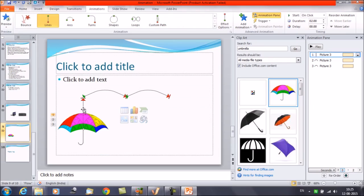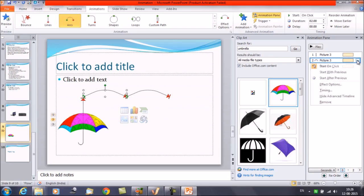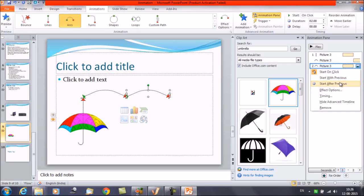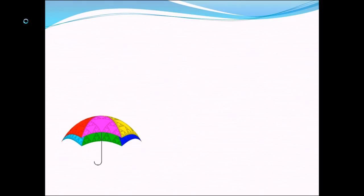Now suppose we want the animation to take place on its own. We set the first animation to start on click, then for the second animation we select Start After Previous, and the third also Start After Previous. Now let's run the slideshow — press Enter and you can see what happens to the object.